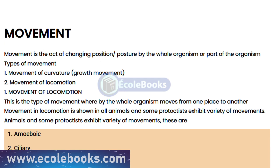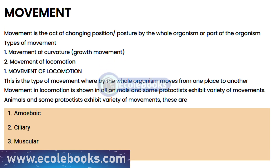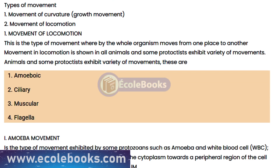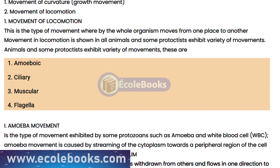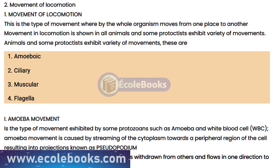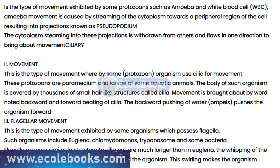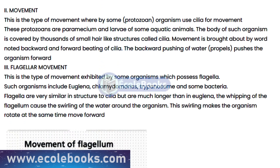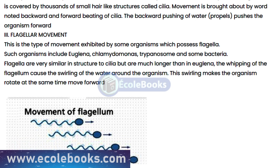There are two main types of movement: locomotion and non-locomotion. Locomotion is the ability of an organism to move from one place to another, and it is achieved through the use of muscles and the nervous system. Non-locomotion is the ability of an organism to change its position without actually moving, and it is achieved through the use of growth or changes in shape.